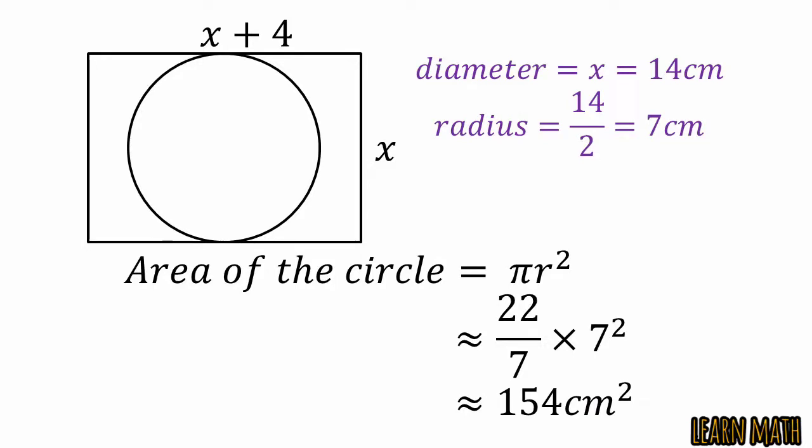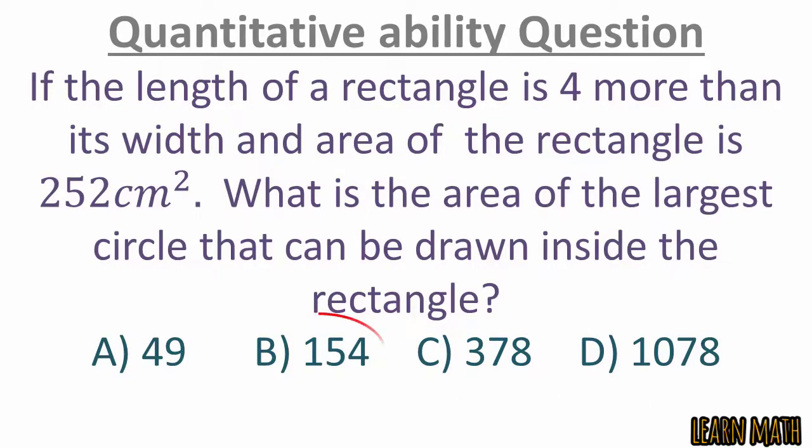So, the correct option is option B. The area of the largest circle that can be drawn inside the rectangle is 154 cm².